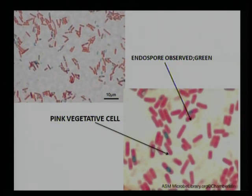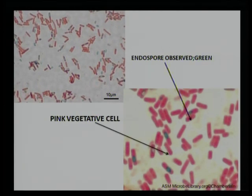Studies have been made to understand the germination of endospores of Bacillus cereus. Detection of endospores of bacilli using techniques like PCR have also been developed. These are highly valuable in detecting the presence of contaminants, which may be endospore formers in products of value including milk and milk products.